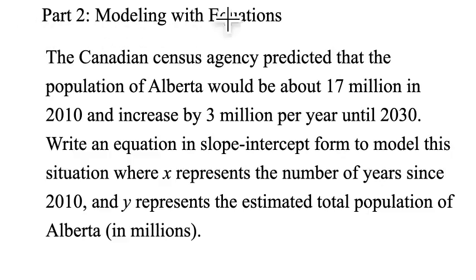Let's do some more modeling with equations. The Canadian Census Agency predicted that the population of Alberta would be about 17 million in 2010 and increase by 3 million per year until 2030. Write an equation in slope-intercept form to model this situation where x represents the number of years since 2010 and y represents the estimated total population of Alberta in millions. We're looking for the rate of change and how much we're starting with.